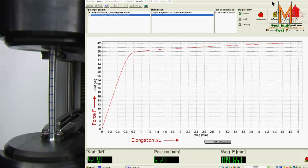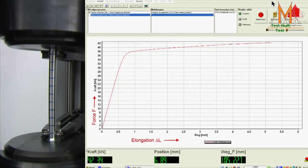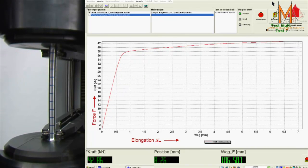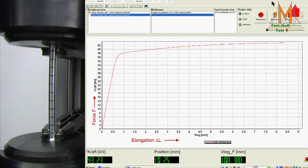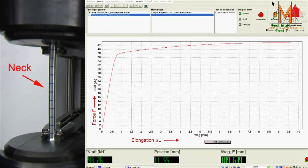In the further course of the tensile test, the force increases and the test piece again is strained uniformly along its length. At the point of maximum force, a neck develops, and all subsequent plastic deformation is confined to this neck until fracture finally occurs there.